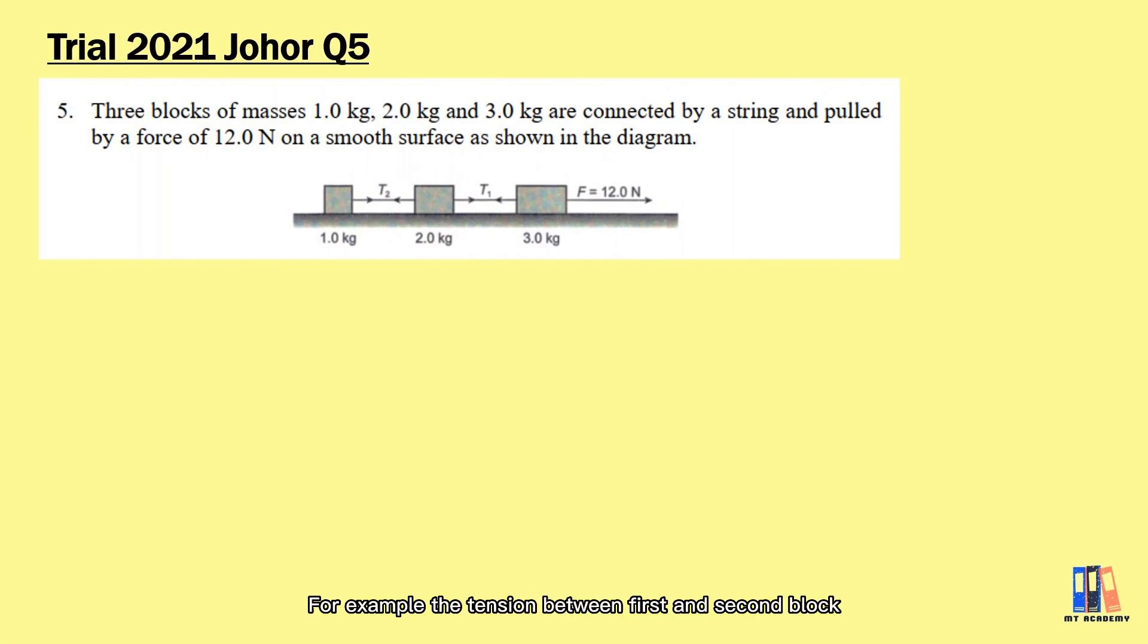For example, the tension between first and second block, which is also the pulling force: the 1 kg mass is pulling the 2 kg mass to the left, while the 2 kg mass is also pulling the 1 kg mass to the right. Both tensions here will have the same magnitude but in the opposite direction.